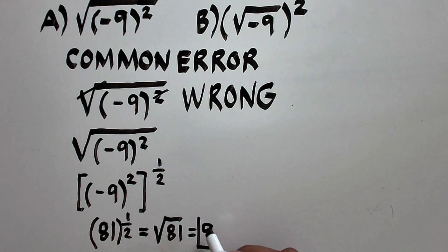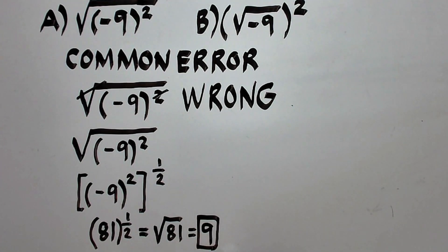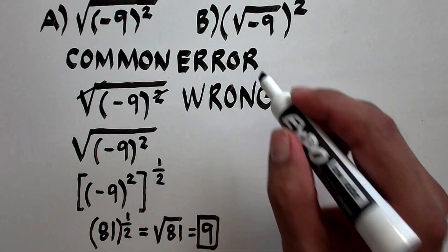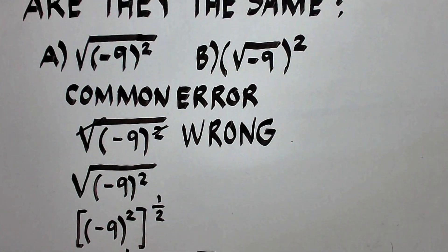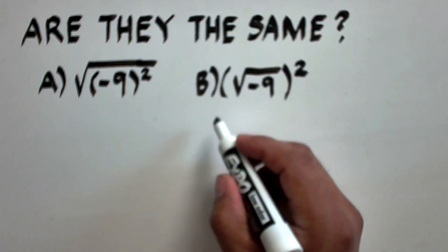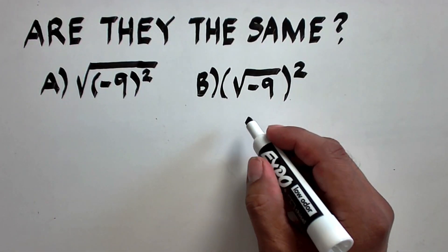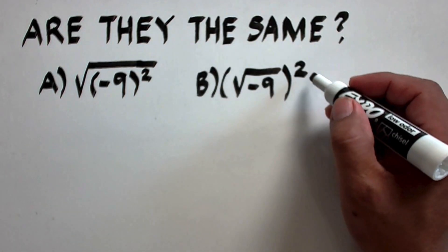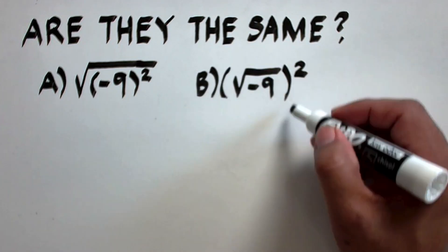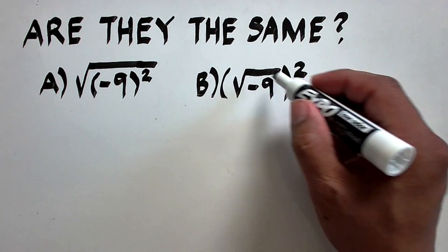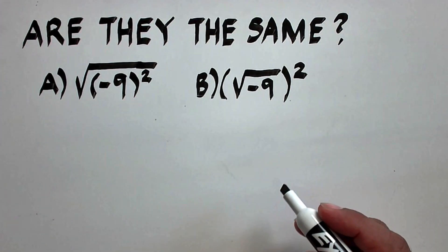For letter A, the answer is positive 9. Now let's talk about letter B. For letter B, you have the square of the quantity of the square root of negative 9.